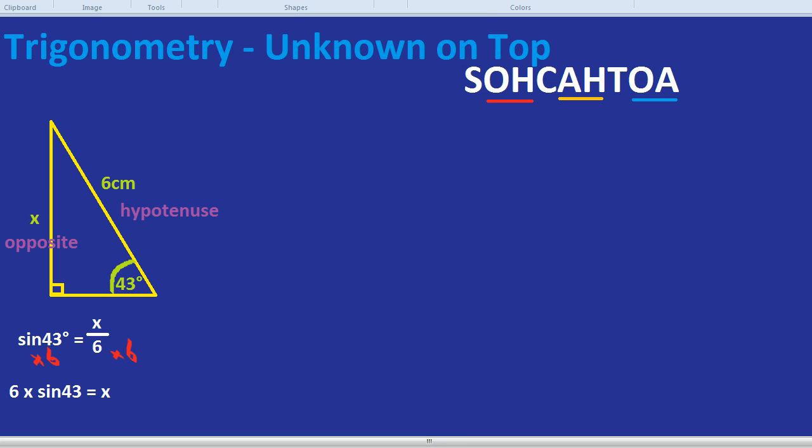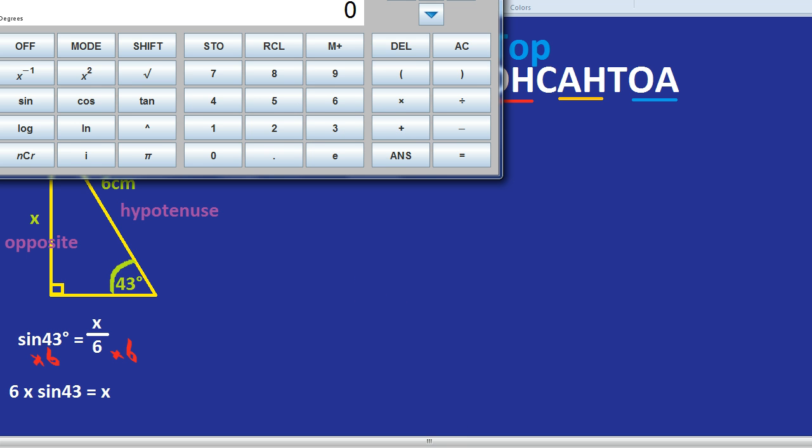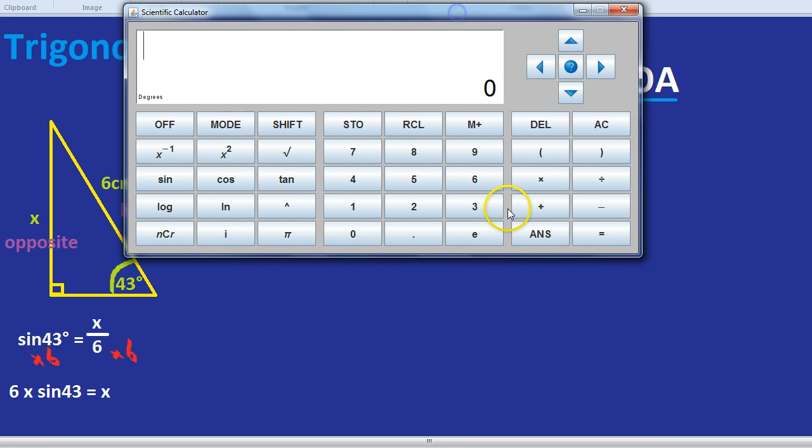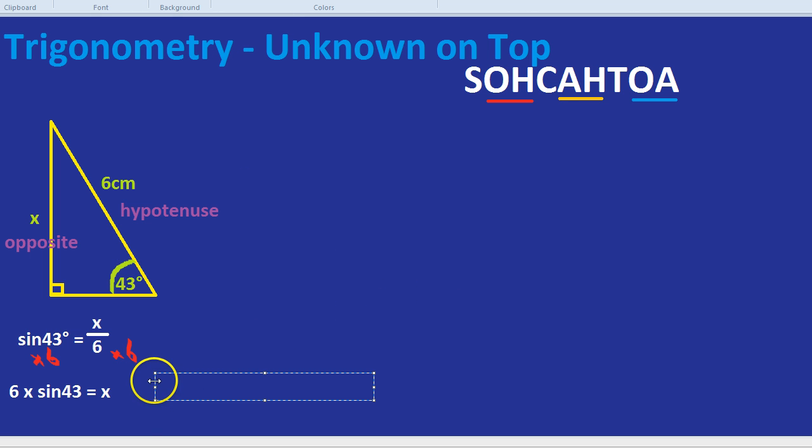Now we get out our calculator and as I said we do the six first so we would do six times by sine of 43 and we get 4.09. So in this question x is 4.09 centimeters to two decimal places.